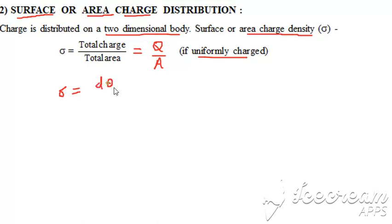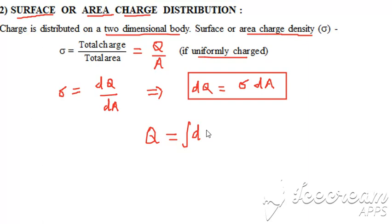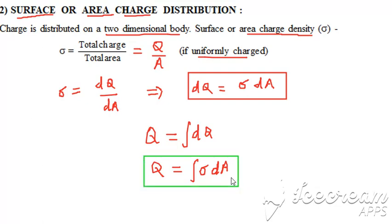In general, if charge is non-uniformly distributed, the charge density is written as dQ upon dA. To calculate total charge when charge density is known, we write dQ = σ dA, where dQ is the differential charge on differential area dA with charge density σ. The total charge Q is then the integration of dQ, substituting σ dA, giving us the formula for charge calculation in two-dimensional cases.